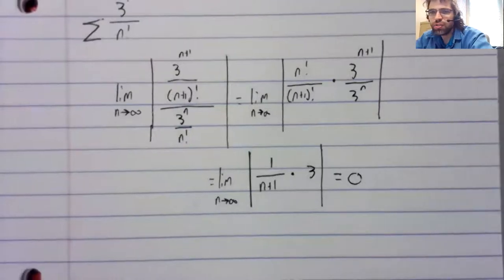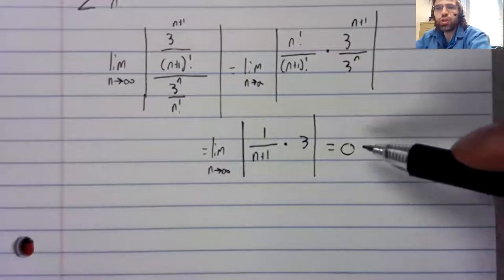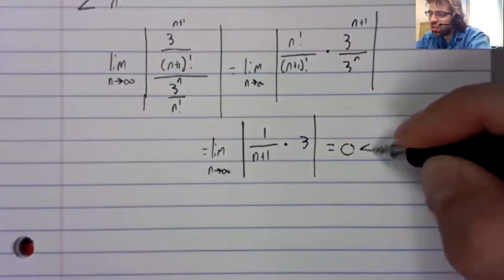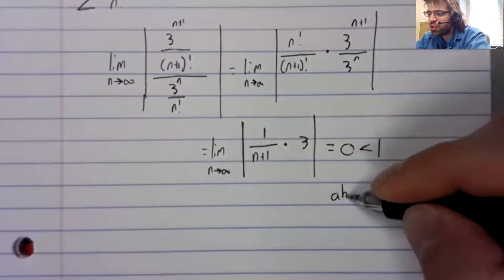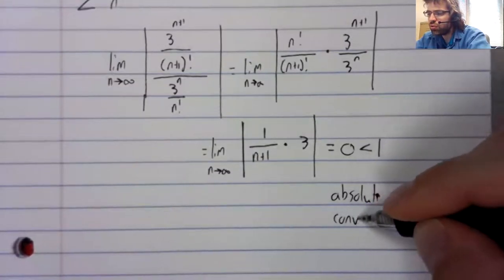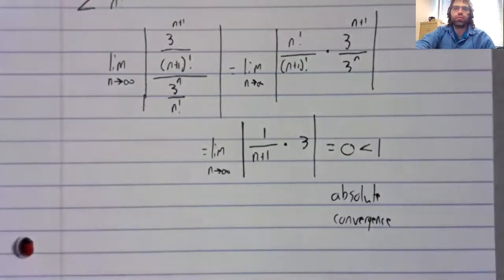This limit is zero. And interpreting the ratio test, anything that's less than one means absolute convergence.